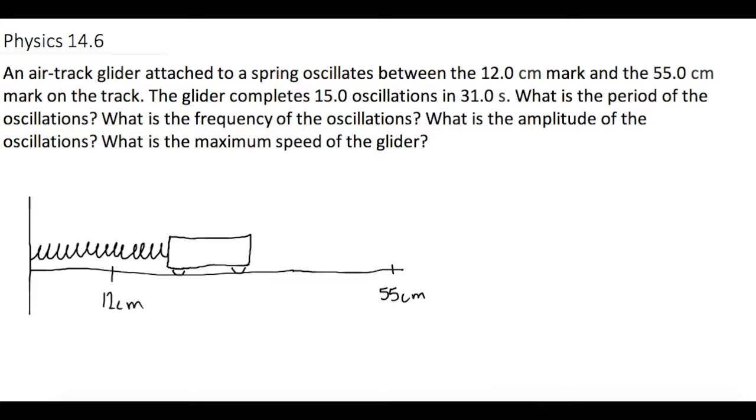In this question, they want to know what the period, frequency, and amplitude of this air track that's sliding back and forth is. They tell us that it's sliding back and forth between the 12 centimeter and the 55 centimeter marks.